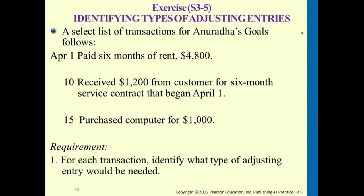The first one: pay six months of rent, $4,800. On April 1st we paid six months of rent, so by the end of this month we will have to record rent expense and reduce prepaid rent. So this falls under prepayments — prepaid expenses — the first category of adjusting entries.